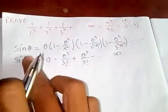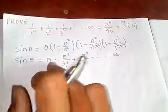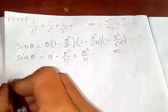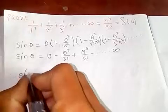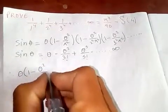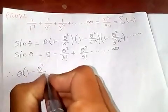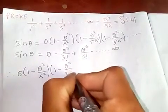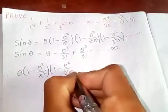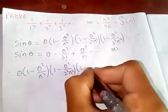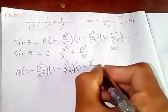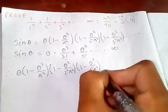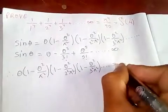Now both left-hand sides are equal, so the right-hand sides must also be equal. Therefore: θ times (1 minus θ squared over π squared) times (1 minus θ squared over 2 squared π squared) times (1 minus θ squared over 3 squared π squared) and so on. Now taking logarithm of both sides.